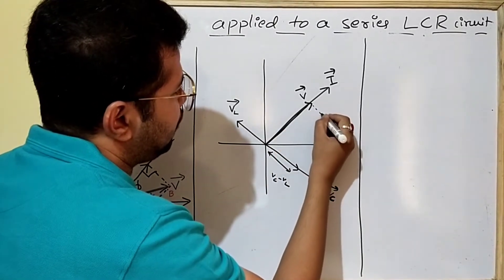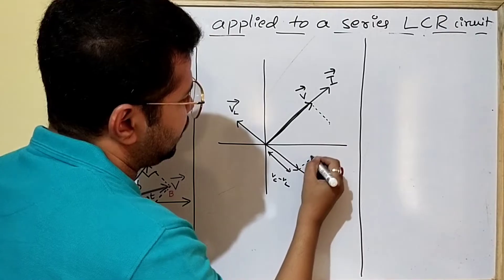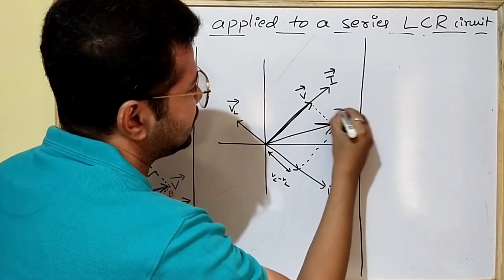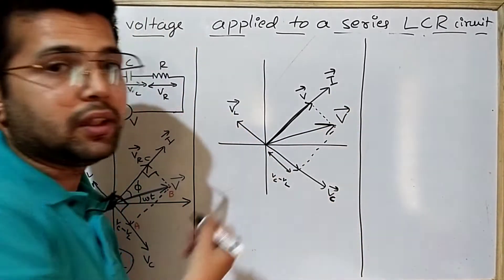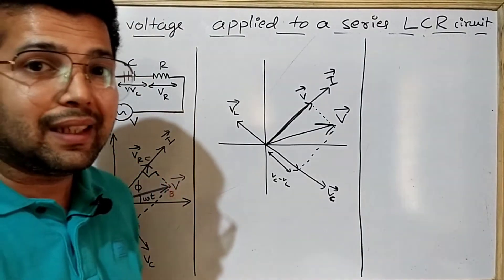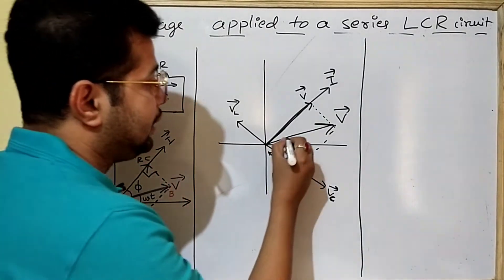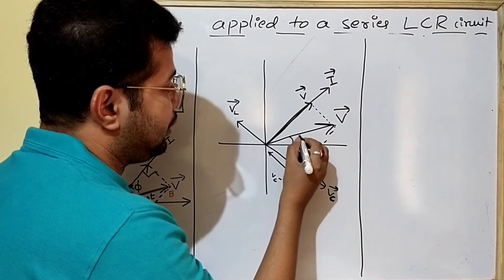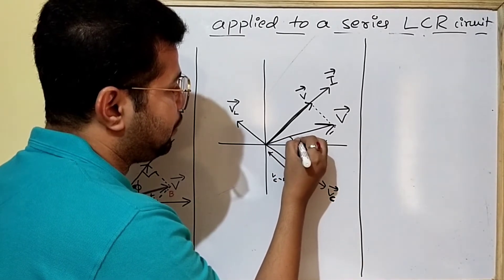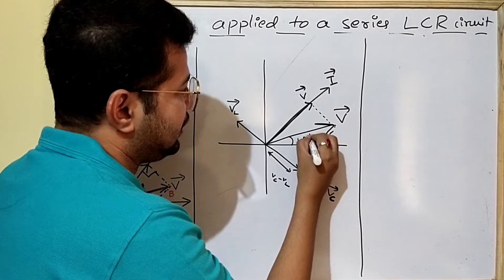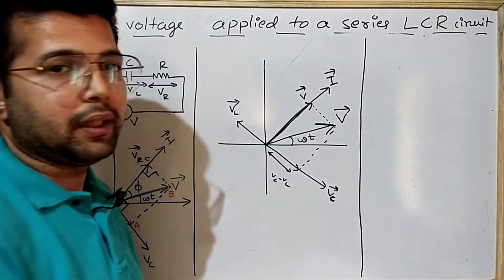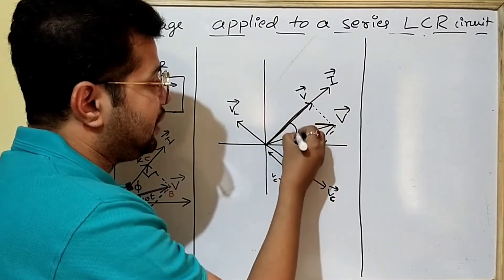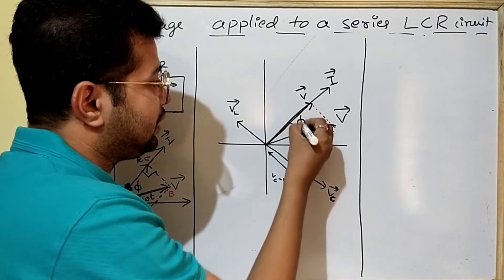Using the parallelogram law of vector addition, this will be the resultant voltage. Say the applied alternating voltage is V equal to Vm sin(omega t). The phase difference between the resultant voltage and current is phi.